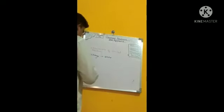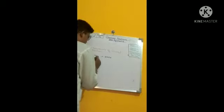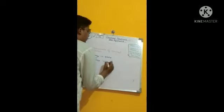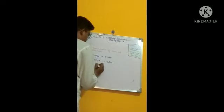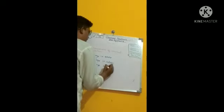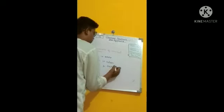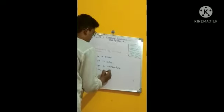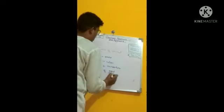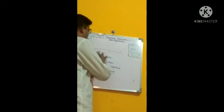There are four characteristics of chemical reaction. The second characteristic is change in color. The third characteristic is change in temperature. And the fourth characteristic is evolution of gas. These are the four characteristics of a chemical reaction: change in state, change in color, change in temperature, and evolution of gas.